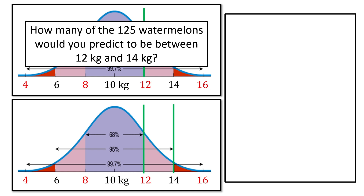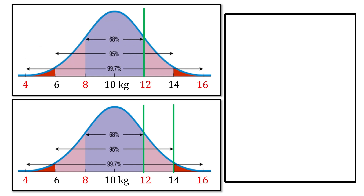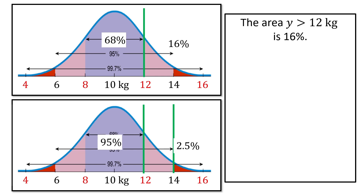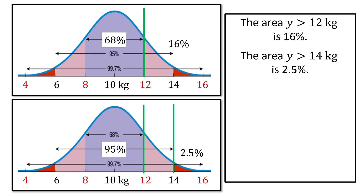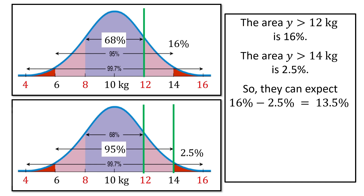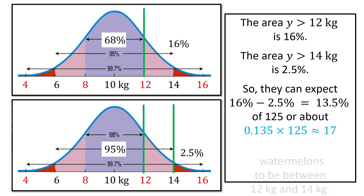Next question: how many of the 125 watermelons would you predict to be between 12 kilograms and 14 kilograms? This one is a little more tricky. We know that if we start at 12 and go to the right, that represents 16%, because 12 is one standard deviation above the mean. We also know that if you start at 14 and go to the right, that represents 2.5%. So 16% minus 2.5% gives us 13.5%. That's 13.5% of 125, which is about 17 watermelons in total.